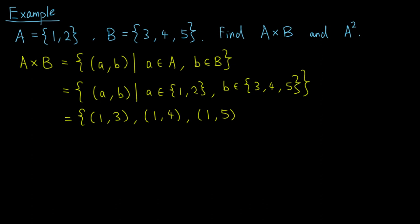The other possibility is a equals 2, and again b can be 3, 4, or 5. So we have the ordered pairs (2, 3), (2, 4), and (2, 5).